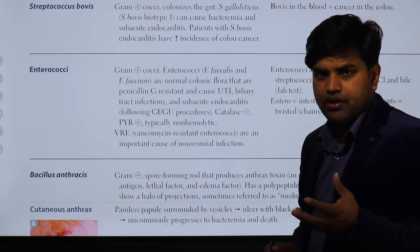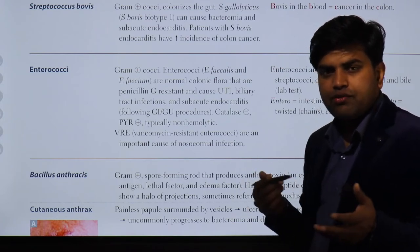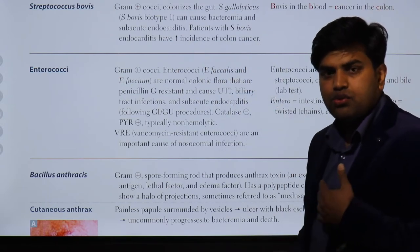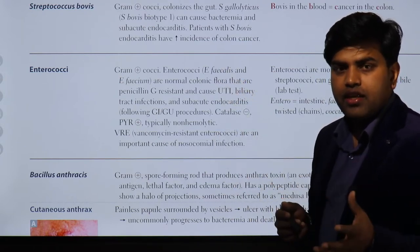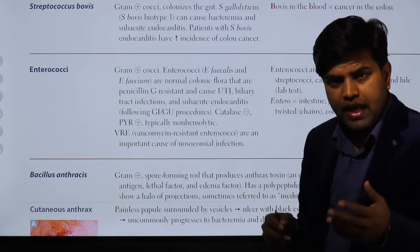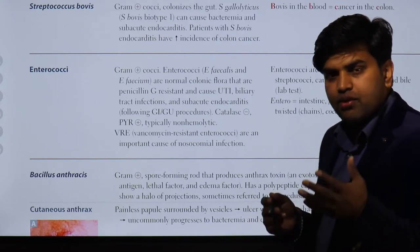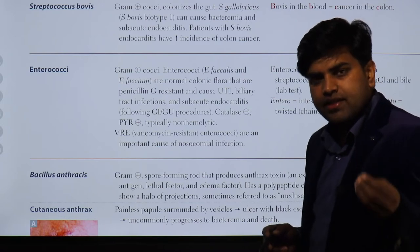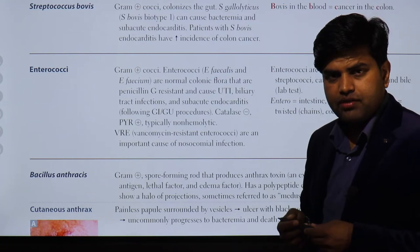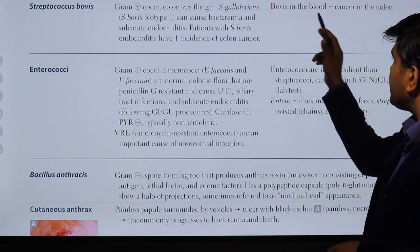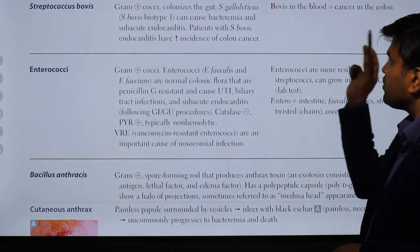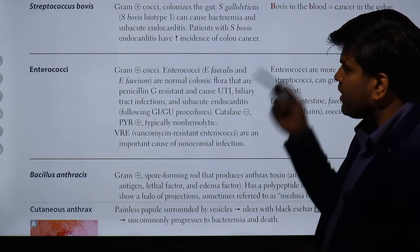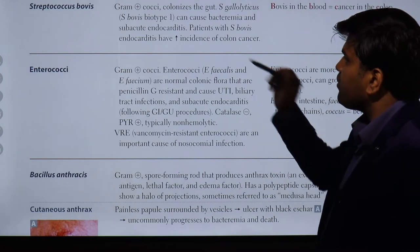Streptococcus bovis is important because it is responsible for subacute bacterial endocarditis. Patients with Streptococcus bovis endocarditis have an increased incidence of colon cancer. If this organism — normally flora of the intestine — appears in the blood, it means there must be some lesion or porosity in the colon, usually a cancer. The organism enters the blood through that colonic lesion, then attacks the heart valves and develops infective subacute endocarditis. So Streptococcus bovis in the blood essentially equals cancer in the colon.